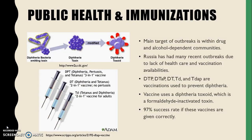Today, the main target of outbreaks lie within drug and alcohol dependent communities. Russia has had a particularly difficult time ridding the country of the disease due to their drop in healthcare and vaccination availabilities. There are vaccinations to prevent C. diphtheriae, such as DTaP, Tdap, DT, and Td.